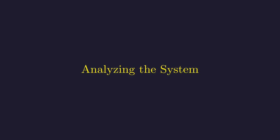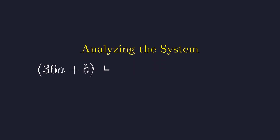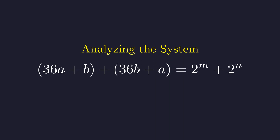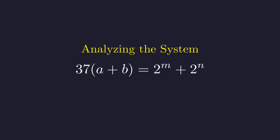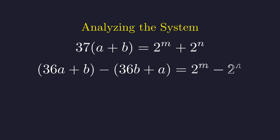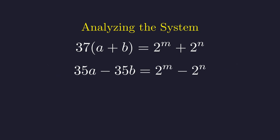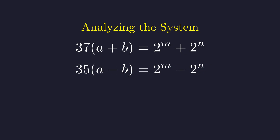With a symmetric system of equations, a standard technique is to add and subtract them to reveal underlying structure. First, adding the two equations gives 37a + 37b on the left side, and factoring out 37 reveals our first key relationship. Next, subtracting the second equation from the first yields 35a − 35b, and factoring out 35 gives our second key relationship.